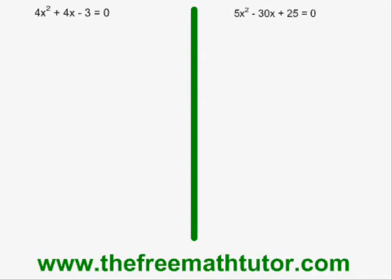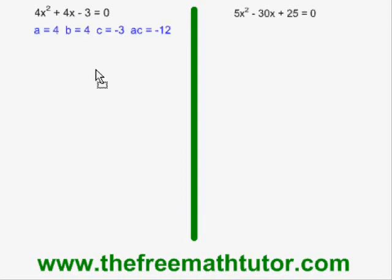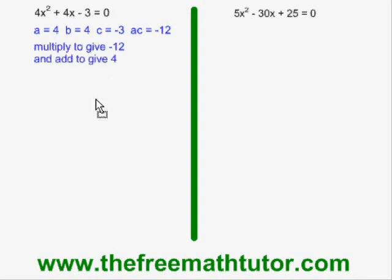When we are asked to solve a quadratic equation by factoring, one of the factoring methods we have to use is the complex trinomial method. Both of these examples require this method. In the example on the left, I define my a, b, c, and my a·c, and I ask the question: what two numbers multiply to give a·c and add to give b? In this case, what two numbers multiply to give −12 and add to give 4? Those numbers are 6 and −2.